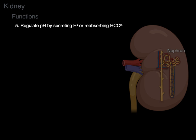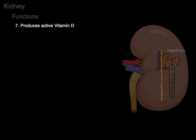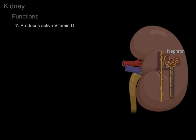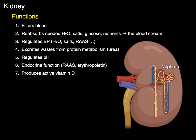The kidneys also regulate pH by secreting hydrogen or reabsorbing bicarbonate. They have an endocrine function via the RAS system — renin-angiotensin-aldosterone system — to maintain mean arterial pressure. They also secrete erythropoietin to help produce red blood cells and produce active vitamin D. As a nephrologist once said, claiming the only function of the kidneys is to excrete urea and urine is like saying the only function of a car is to make exhaust.